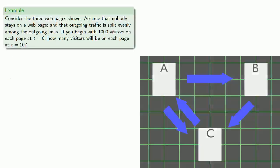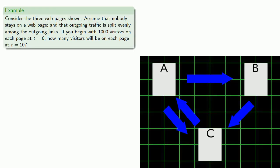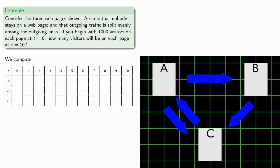For example, let's consider the three web pages shown and assume this is the entire internet. We'll make a few assumptions. First, we'll assume that nobody stays on a web page, that outgoing traffic is split evenly among the outgoing links. So if we begin with 1,000 visitors on each page at t = 0, how many visitors will be on each page at t = 10? Let's set up a table to track the number of surfers on each page. At t = 0, each page has 1,000 surfers.